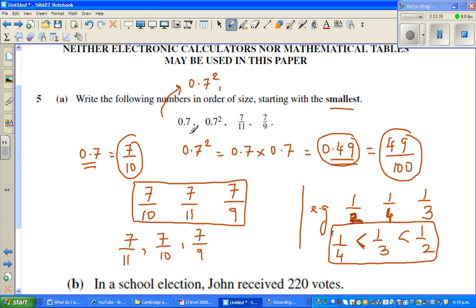The smallest is zero point seven squared. Then the smallest is seven, after that is, you've got seven out of eleven. Then you've got seven tenths. And finally you've got seven nine. So this is how you write from the smallest to the largest.